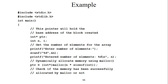We are assigning memory equal to sizeof(int) multiplied by the number of elements n. If the size of an integer is 2 bytes, then 100 * 2 = 200 bytes will be assigned. If the size of an integer is 4 bytes, then 400 bytes will be assigned. The statement is: ptr = (int*) malloc(n * sizeof(int)), so that amount of memory will be allocated.